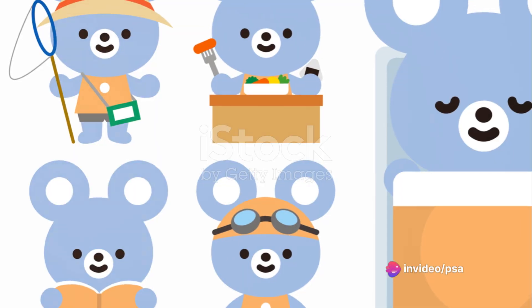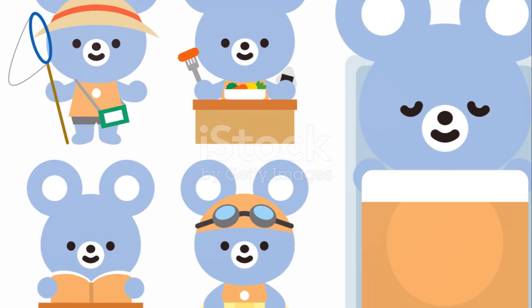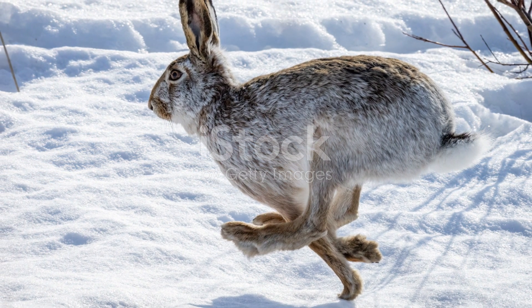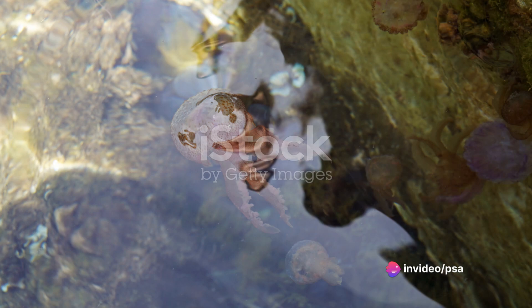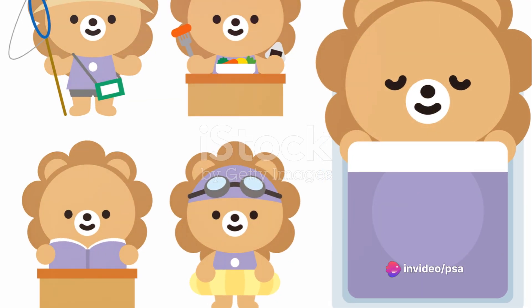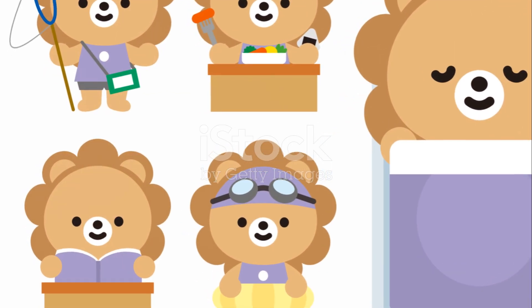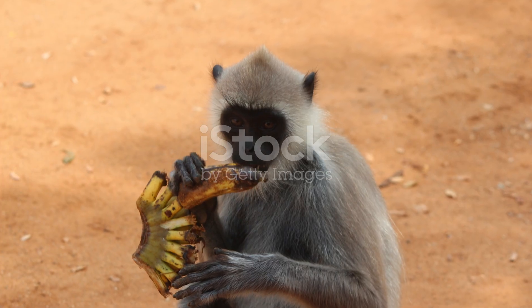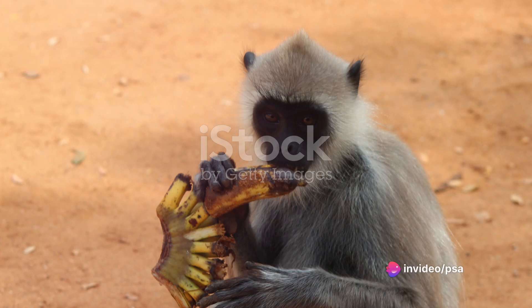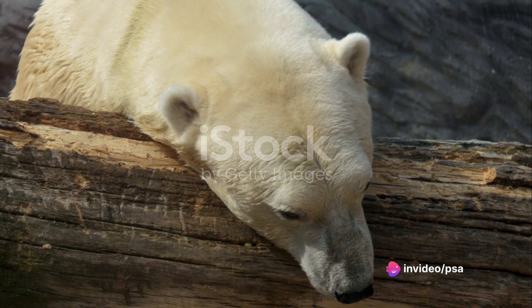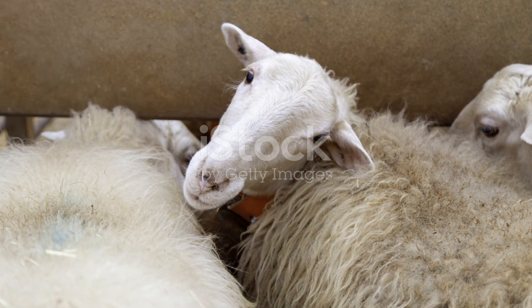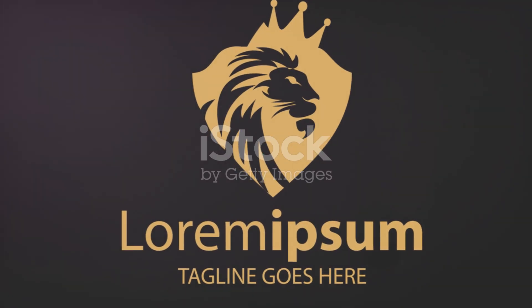Some took to the trees, evolving into the first primates. Others became swift runners, the precursors of modern hoofed animals. Yet others took to the seas, giving rise to the ancestors of whales and dolphins. This diversification was a defining moment in the evolution of mammals. It set the stage for the emergence of a host of new species, each uniquely adapted to their environment. From the tiny shrews scurrying in the undergrowth to the colossal whales gliding through the oceans, the mammals had arrived. The world had changed, and in its new form, it belonged to the mammals.